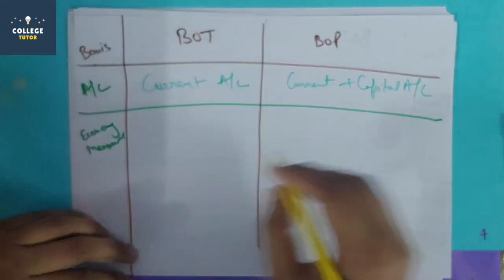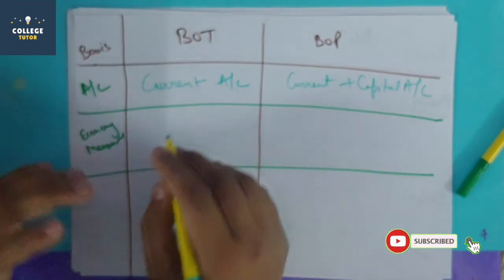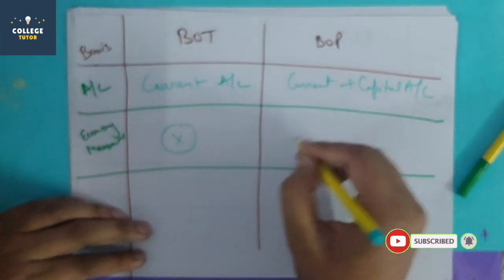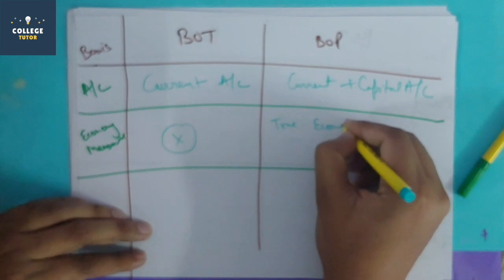We can write about economy measures. However, the balance of trade does not show a 100% true picture. In balance of payment, we know the true economic picture of the country.